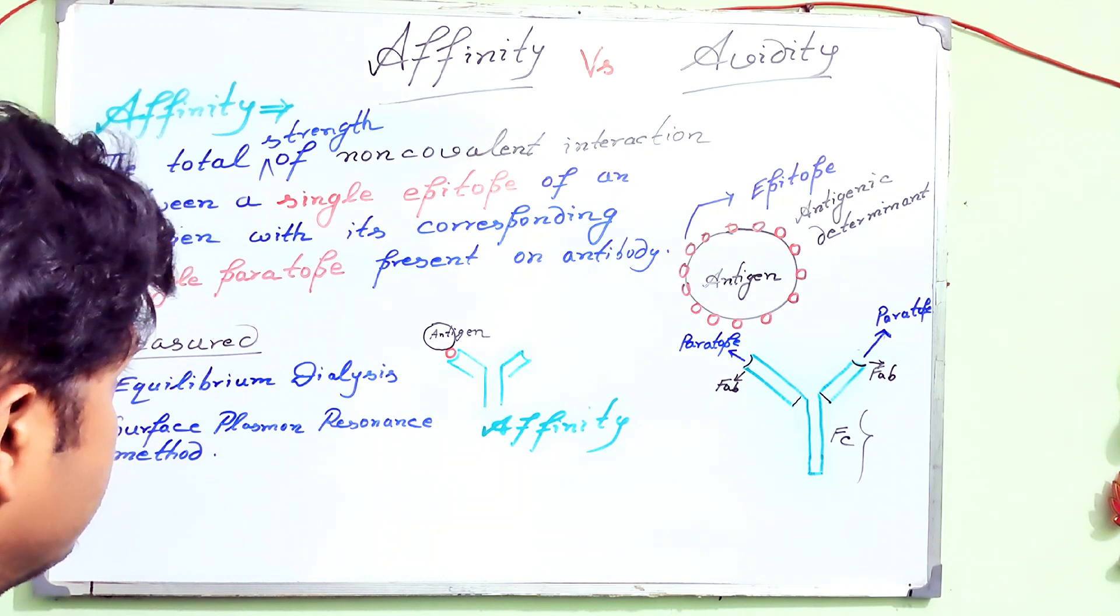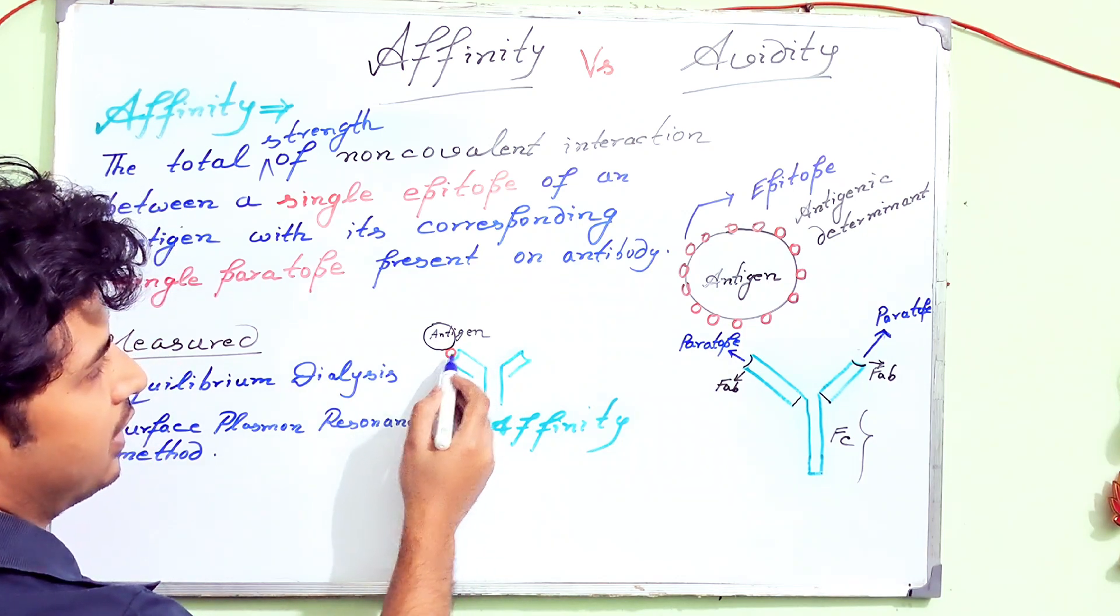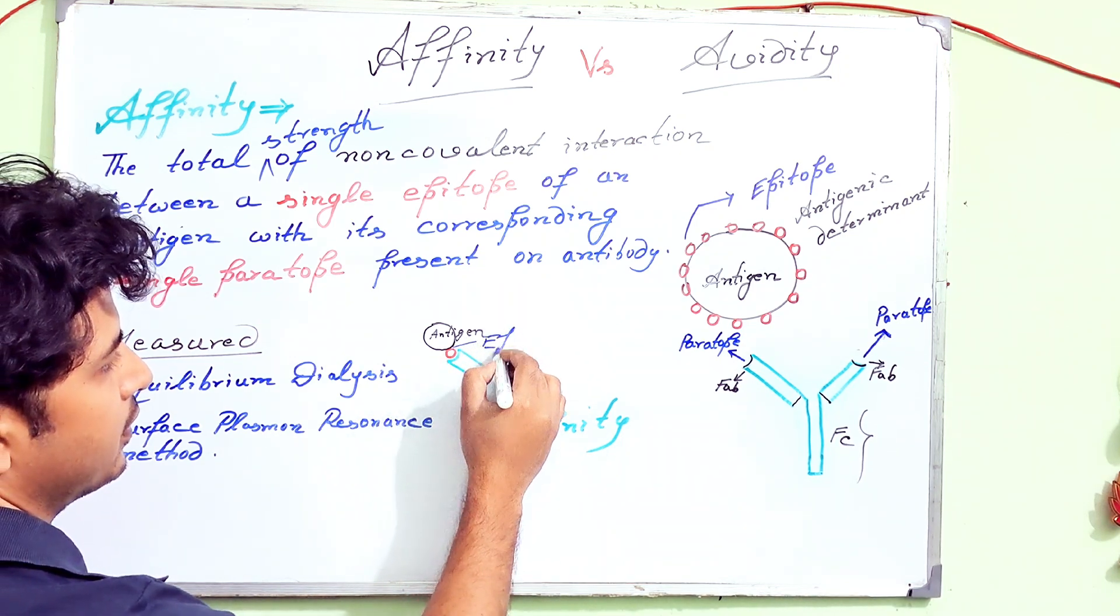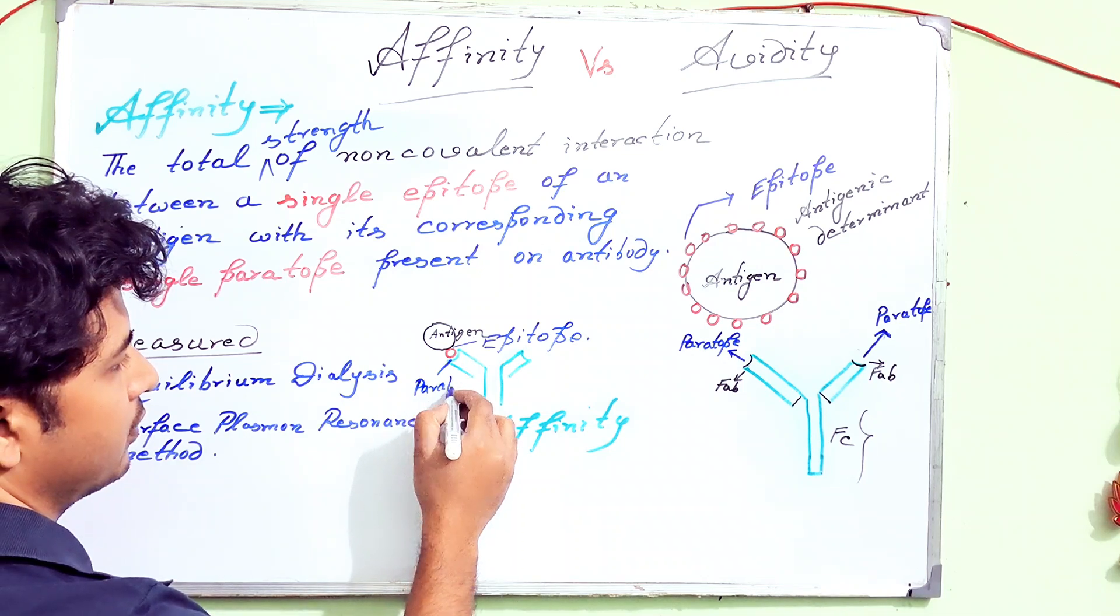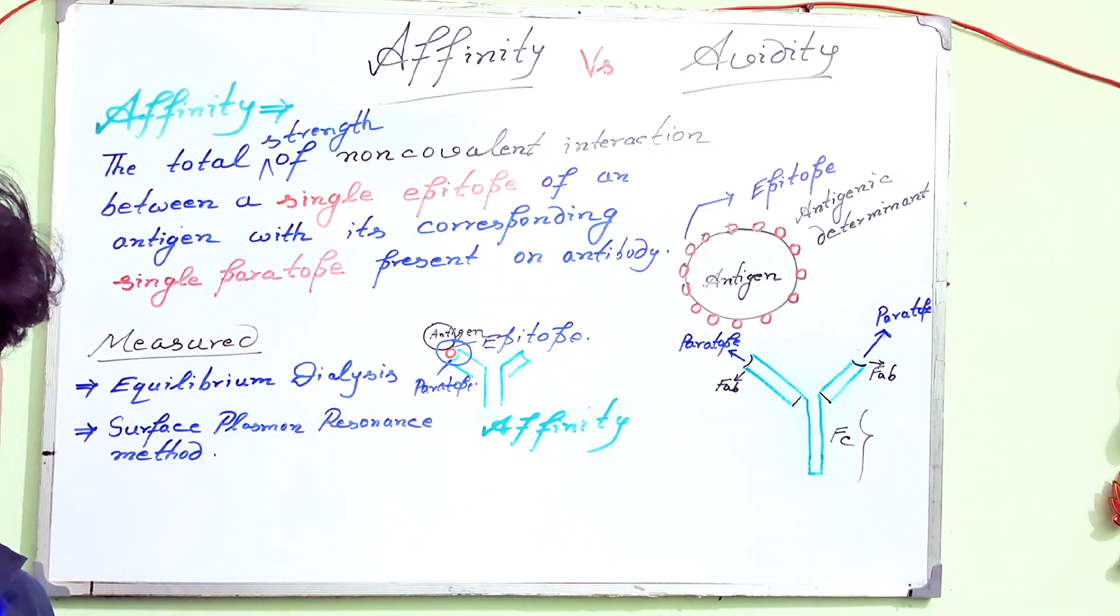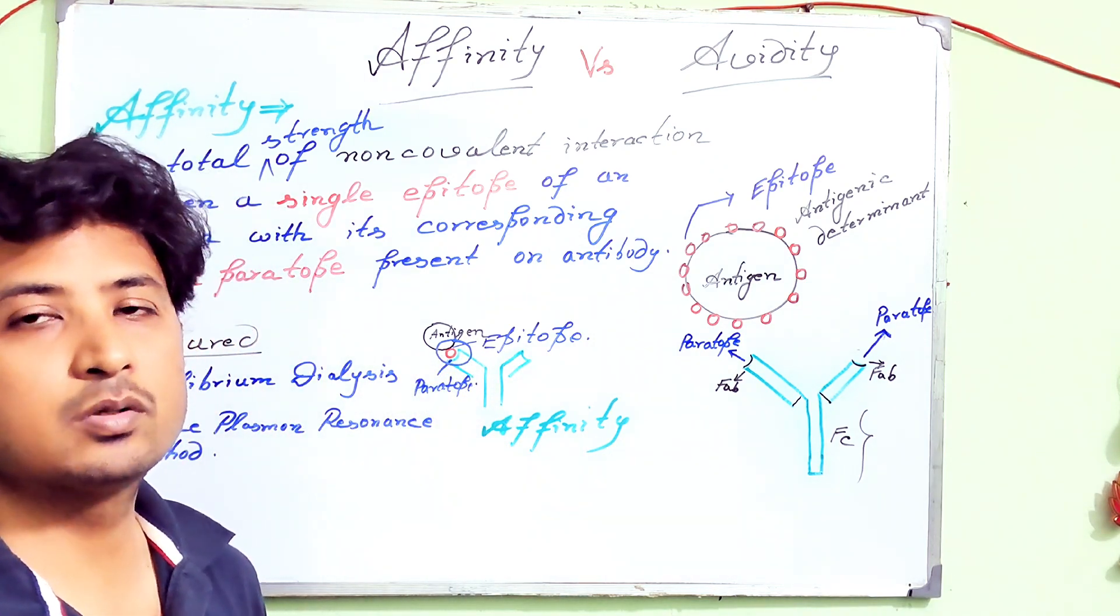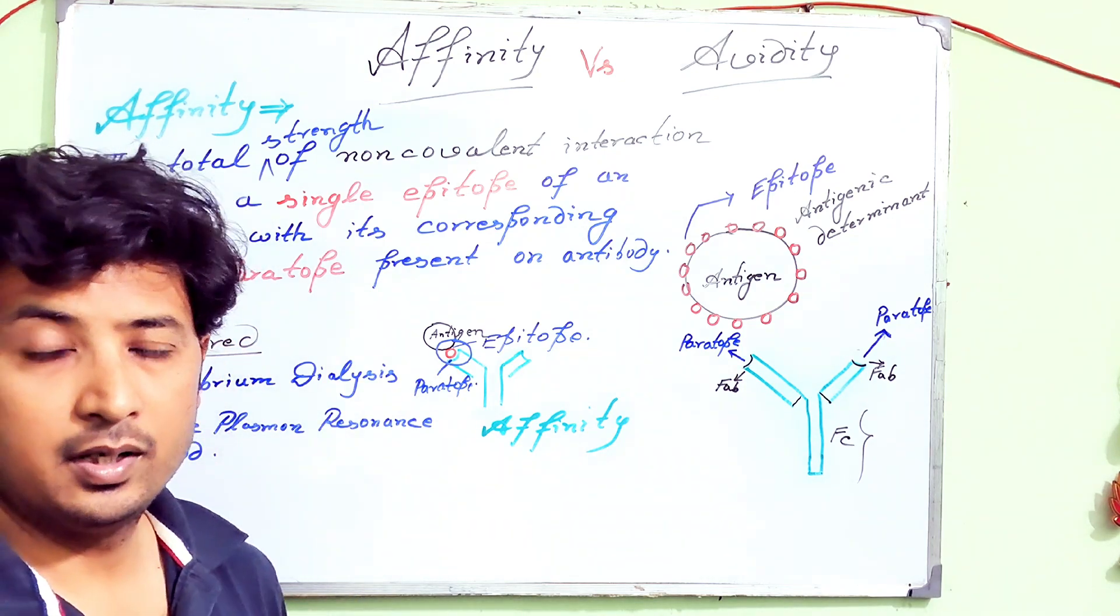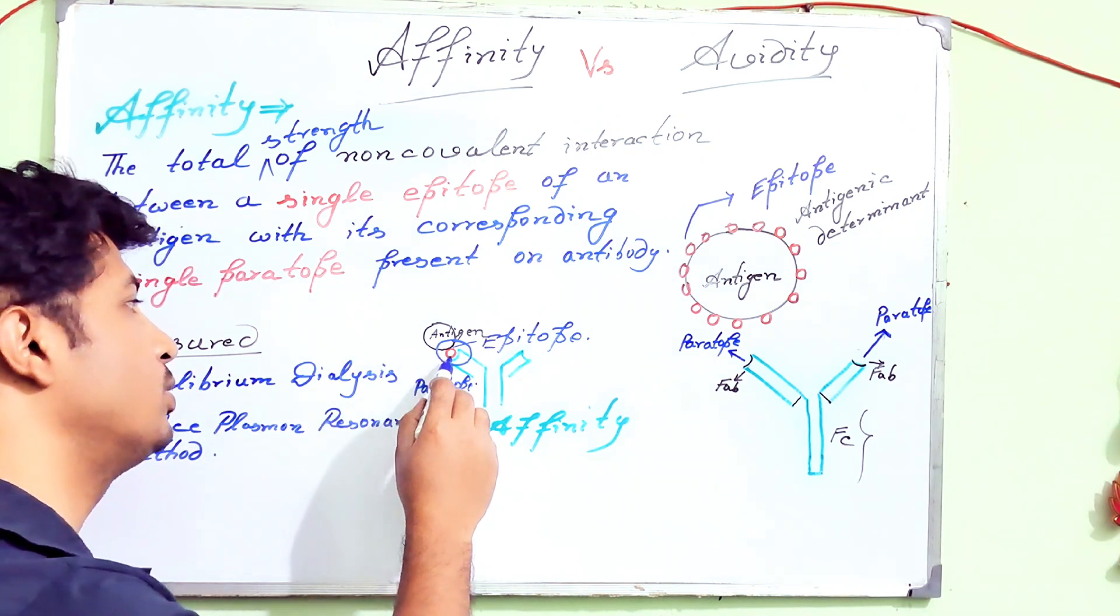I have drawn the picture here. If you see carefully, this antigen marker or the epitope is here—the red one is the epitope binding with its parotope. The total strength between these two sites, epitope and parotope, with its non-covalent interaction total, is called the affinity of antigen-antibody binding reaction. I hope I am clear that antigen-antibody reactions measured through the total of single epitope or single parotope interaction is called affinity.